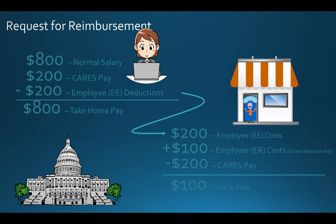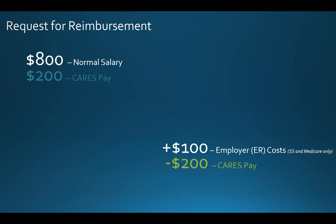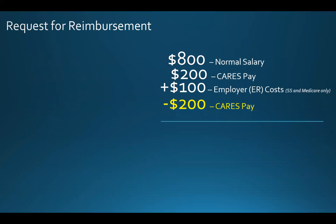Now, we understand that the government pays for COVID leave. How do we calculate what can be requested for reimbursement from OVP? Items that can be requested from OVP are the employee's gross pay and the employer's match of payroll taxes. These amounts will be offset by the CARES Act payment from the government. Since an agency cannot have costs paid by two funding sources, and the federal government has paid for these costs by allowing an agency to deduct them from tax payments, the amount eligible for reimbursement is salary plus employer costs minus the CARES Act deduction.